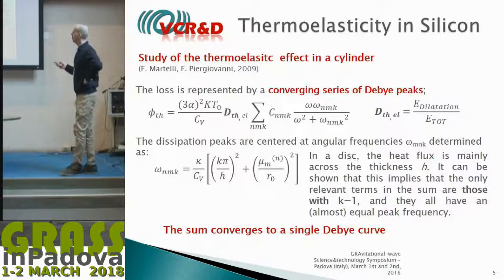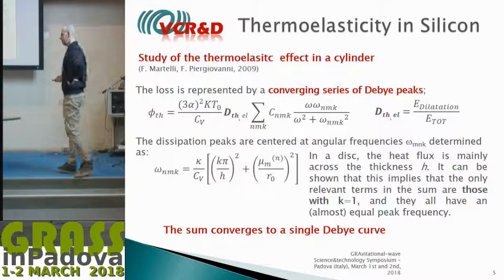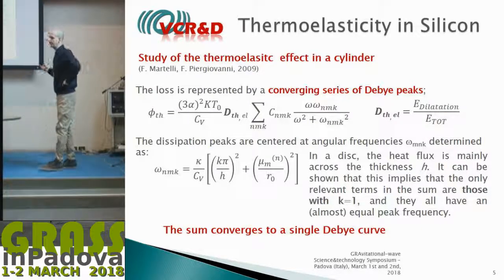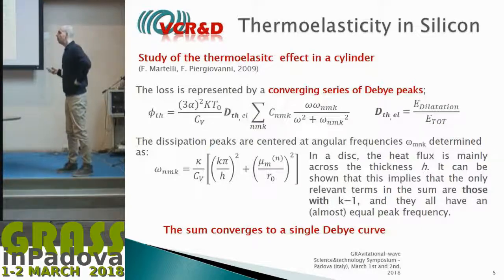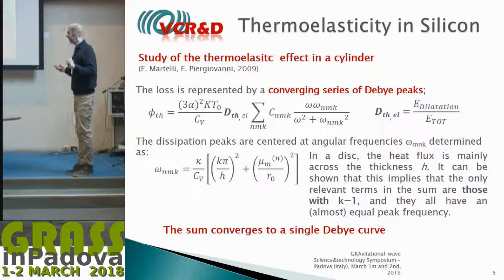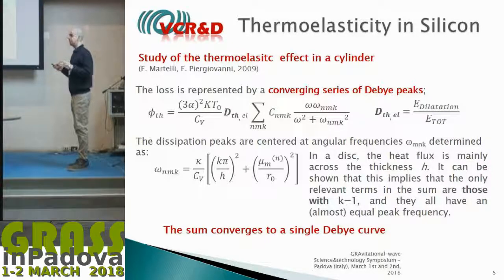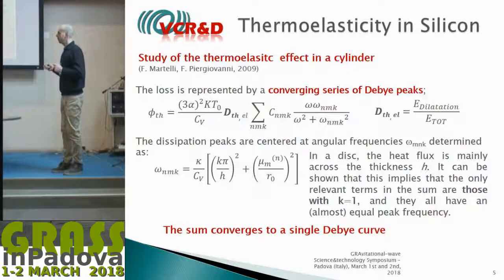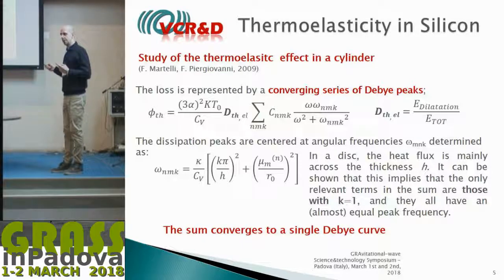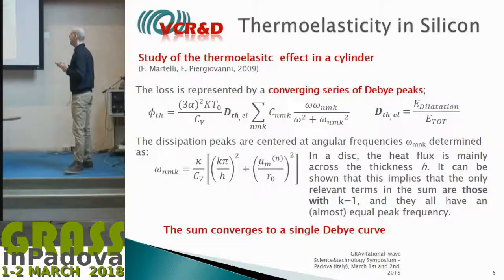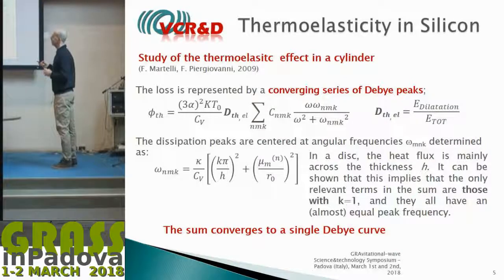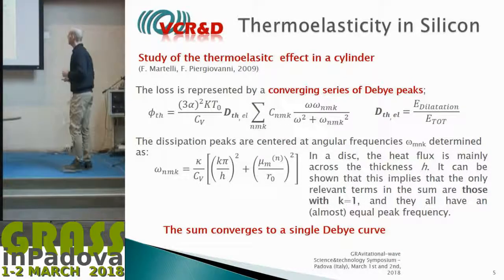The quantity defined as the energy of dilatation inside the sample divided by the total energy is a dilution factor. For a disk, essentially only the k=1 term is relevant, so the terms sum to one and all contributions share nearly the same peak frequency—giving just one bi-peak. The relevant factor in front of the sum is then this dilution factor.